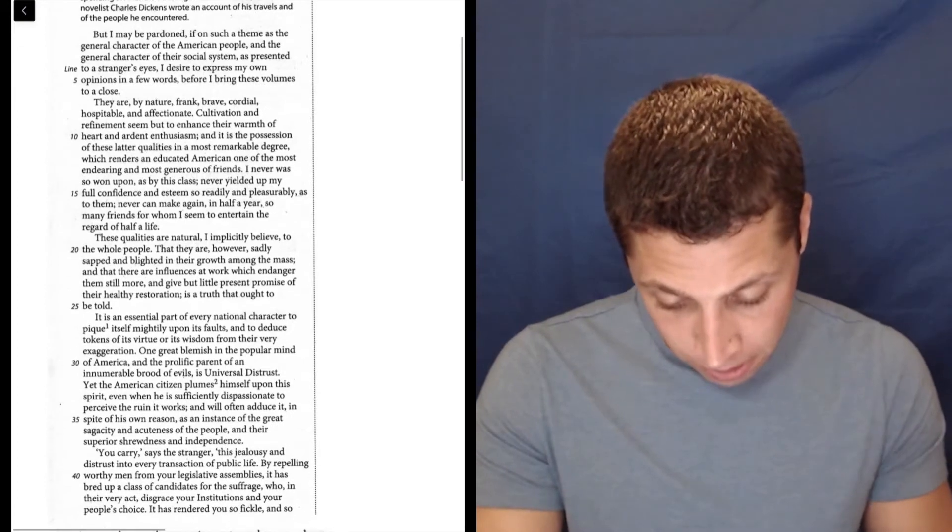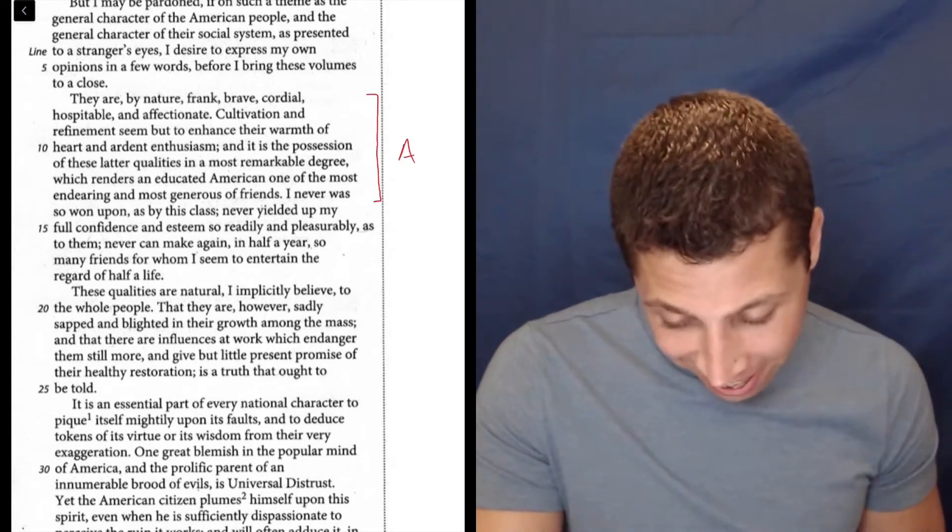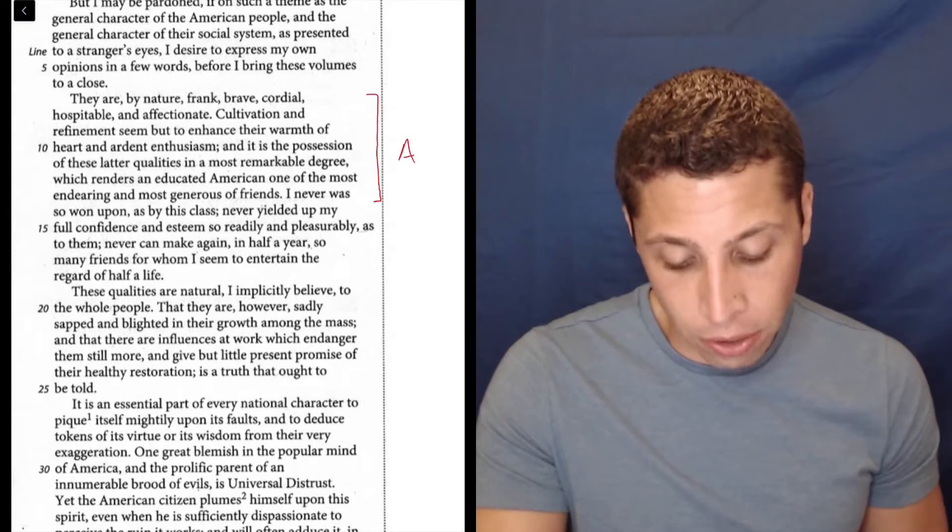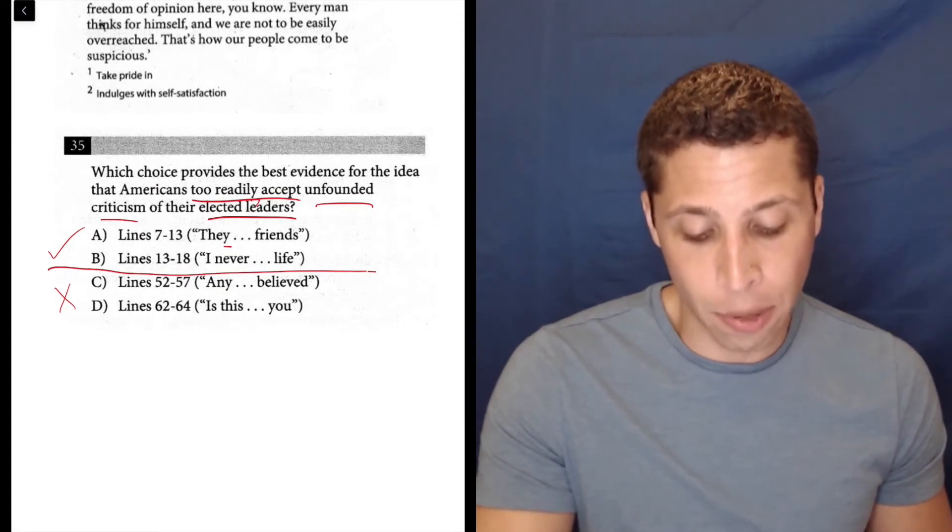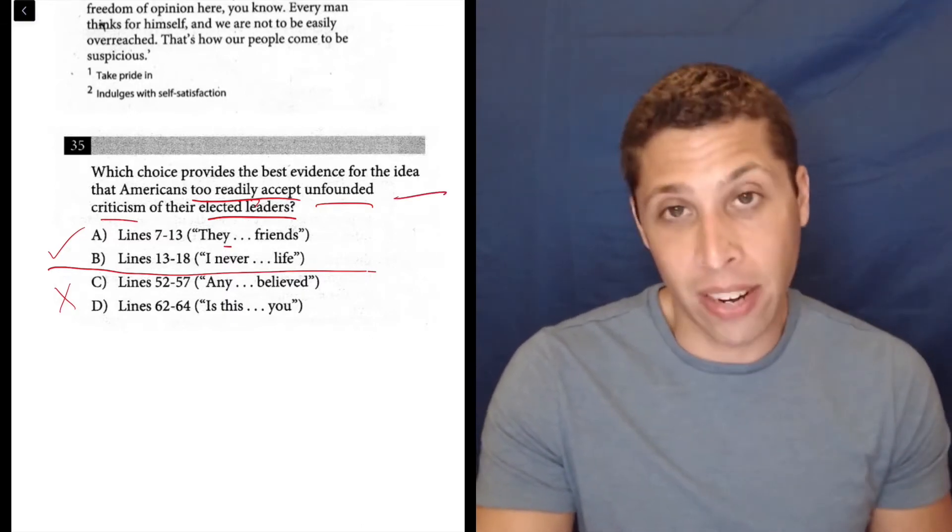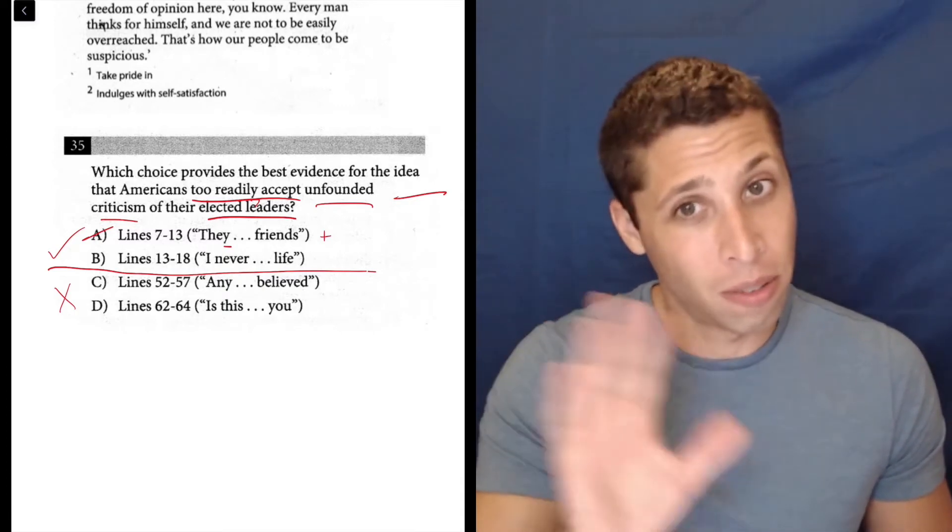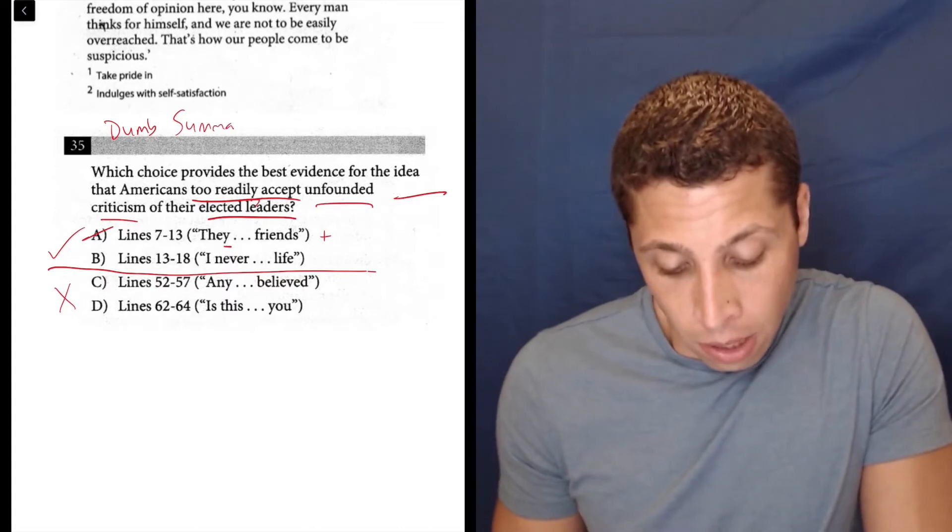So 7 through 13, that is here. They are by nature frank, brave, cordial, hospitable, and affectionate. Cultivation and refinement seem but to enhance their warmth of heart and ardent enthusiasm. You don't need to understand every word of that to understand this is a very positive statement. Now if we go back to the question, Americans too readily accept unfounded criticism of their elected leaders. So they too readily accept criticism. This is a negative idea. This is positive. That doesn't seem to match. So the nuance of the lines don't really matter here. Think about dumb summaries, positives and negatives.